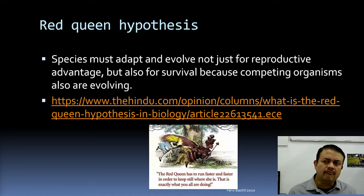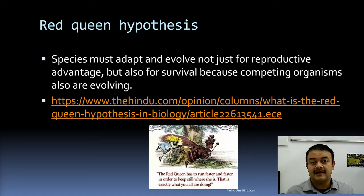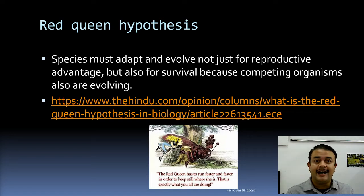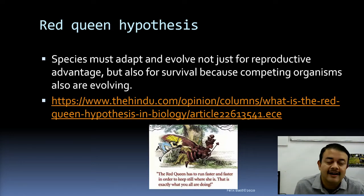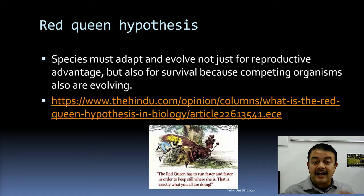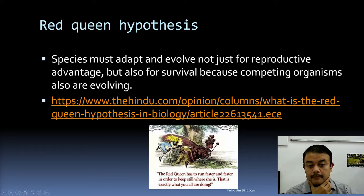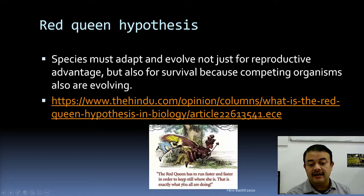Another term is the Red Queen hypothesis. The Red Queen is a character from Lewis Carroll's book 'Through the Looking-Glass,' a sequel to 'Alice's Adventures in Wonderland.' The key concept from that book is that the Red Queen has to run faster and faster just in order to stay in the same place.